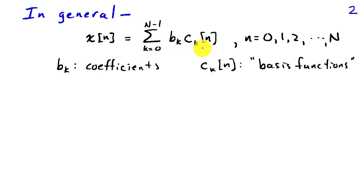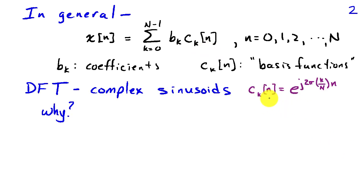Now in the discrete Fourier transform, the ck of n are complex sinusoids. So we have ck of n is e to the j 2 pi k over cap N times lowercase n, where cap N is the length of the signal.